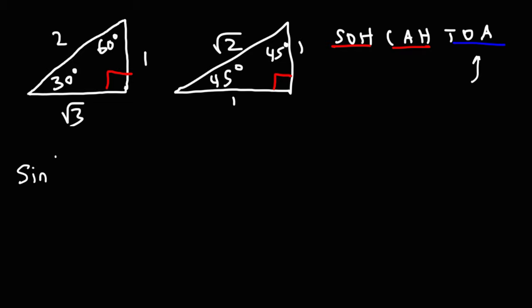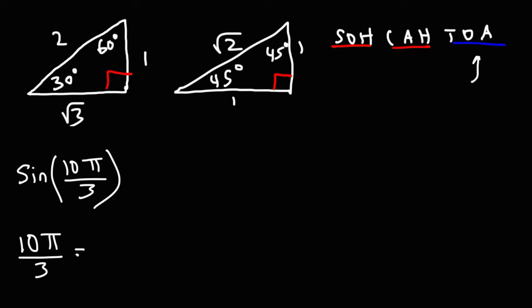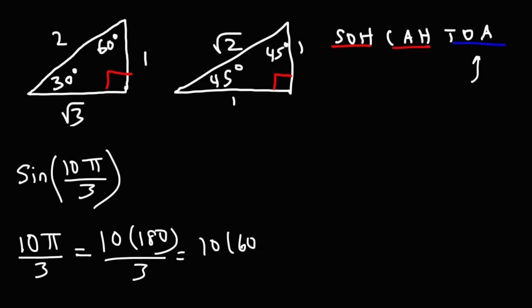Now let's work on sine of 10π over 3. Converting from radians to degrees, replace π with 180. Dividing 180 by 3 gives 60, and multiplying by 10 gives an angle of 600 degrees.